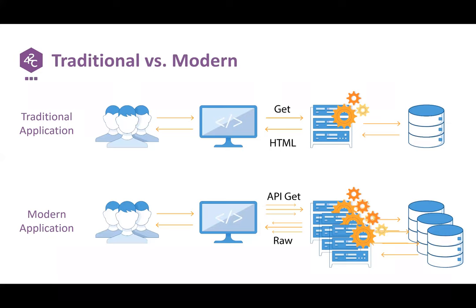Now, why a separate OWASP Top 10 for APIs? The OWASP Top 10 for web security has been out there since around 2003. The reason we're now releasing an OWASP Top 10 for API security specifically is that we believe the attack scenarios and the threat model for API security are different from the ones in traditional web applications.